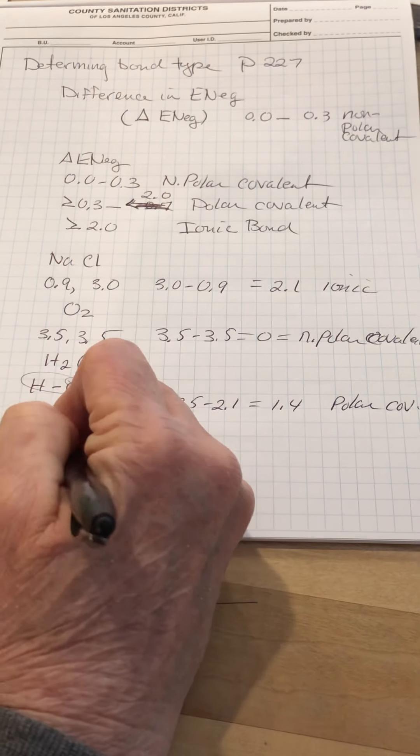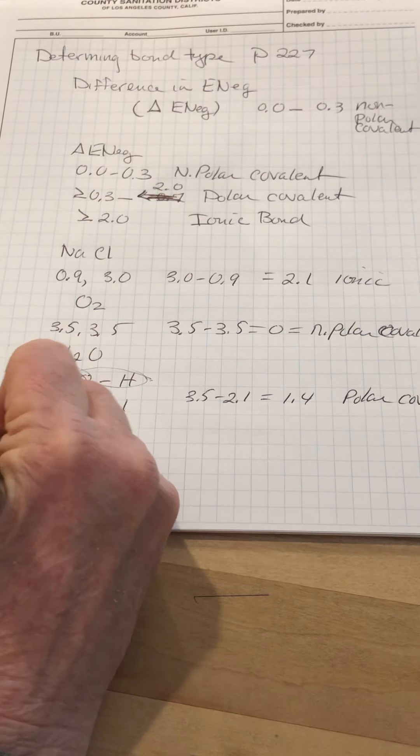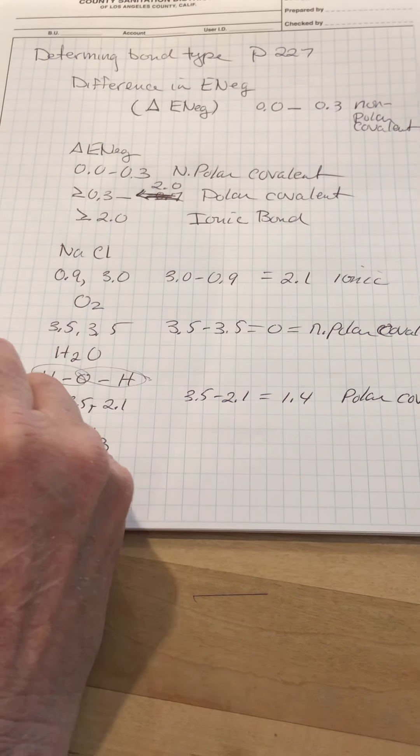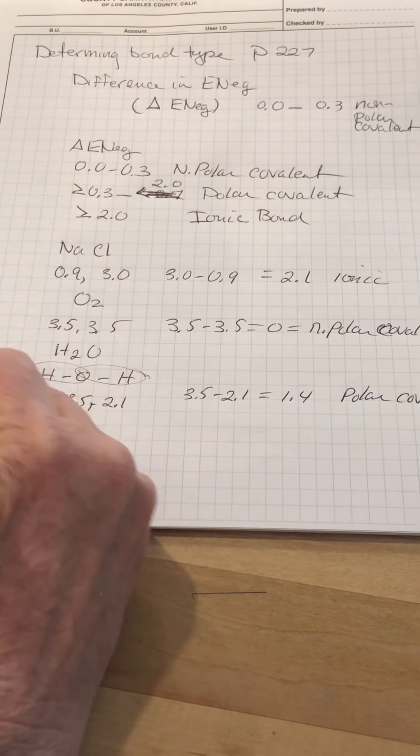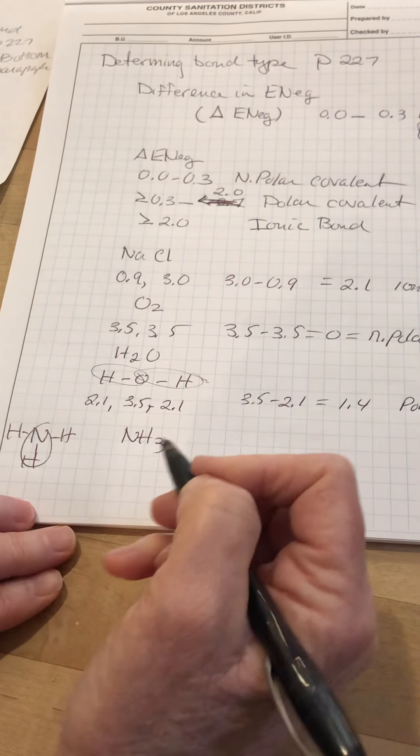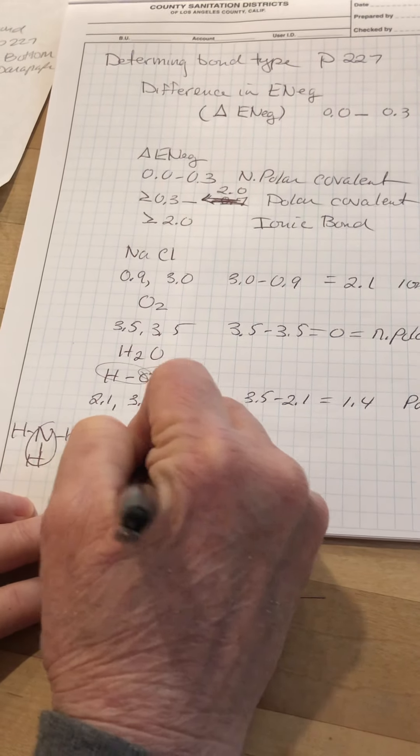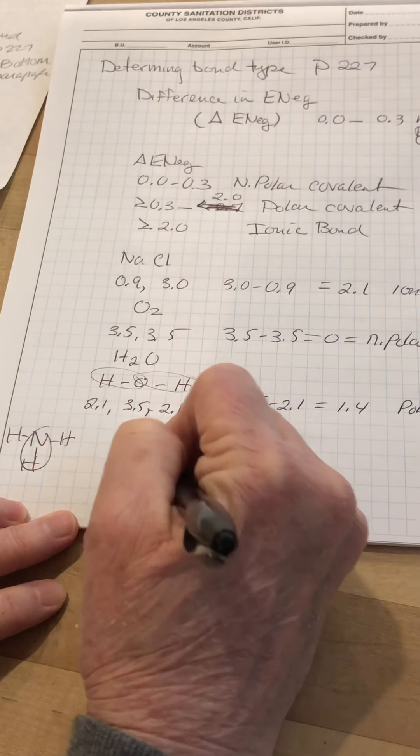If you have ammonia, NH3, the same thing happens. You're looking at N, H, H, and another H. All of the bonds will be identical. So you look up the electronegativity of nitrogen, it's 3.0. Hydrogen is 2.1, again from page 227.